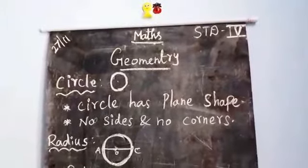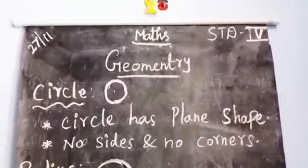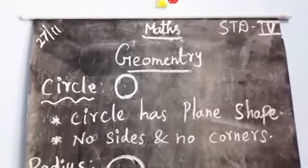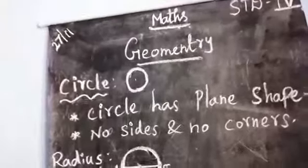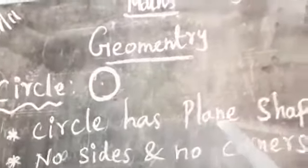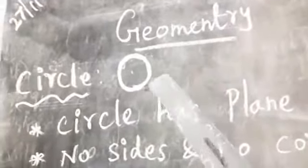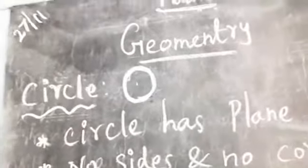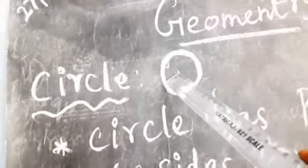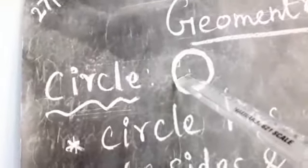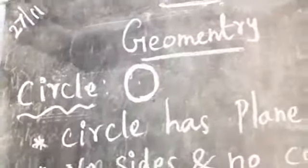Good morning students. Last class we learned about polygon, closed curve, open curve, and line segment. Today we are going to learn about the next two sections: circle. A circle is a plane shape that has no sides and no corners. One point will be there called the center. That point is called the center of the circle.